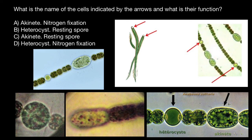Now, let's read the question again. What is the name of the cells indicated by the arrows, and what is their function? Now, we know that this is heterocyte, and they need it for nitrogen fixation. This is answer D.